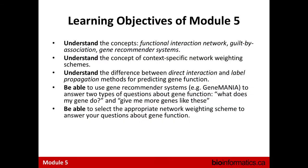Let's look at the learning objectives. The main idea is to get across the concept of functional interaction networks, guilt by association, and the concept of a gene recommender system. You'll also understand how to use context-specific functional interaction networks, how direct interactions differ from label propagation, and most gene function prediction algorithms. If you understand those conceptually, you'll be able to use a gene recommender system like GeneMANIA to answer questions like what do my genes do and which data is most relevant.